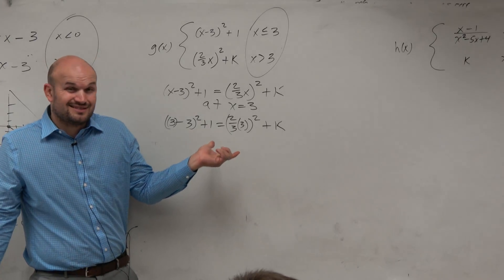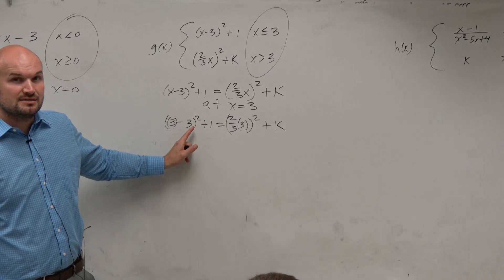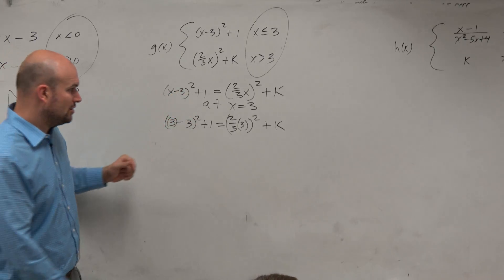So now we have an equation. It's kind of like algebra 1 again, guys. 3 minus 3 is 0. 0 squared is 0 plus 1 is 1.